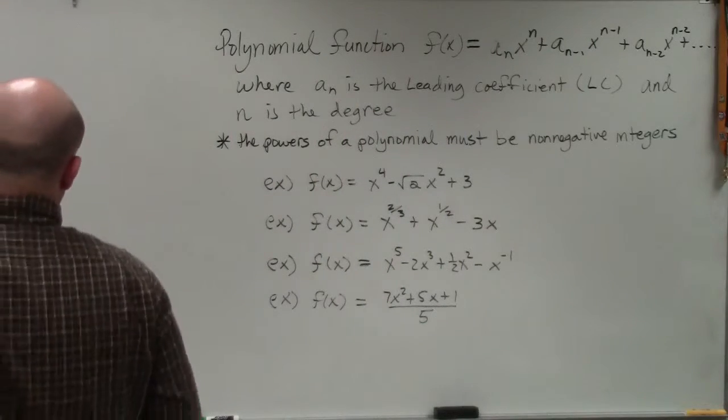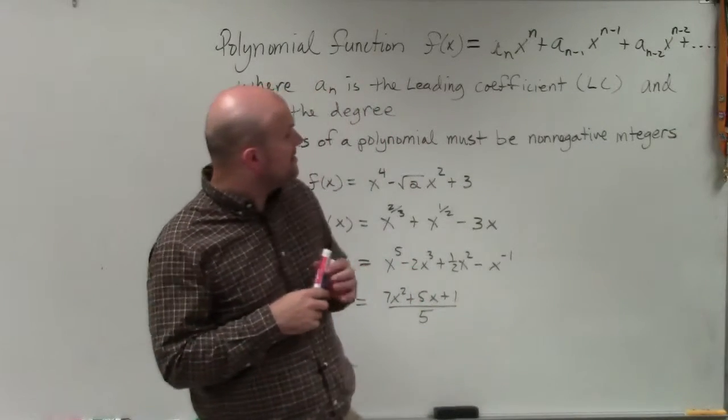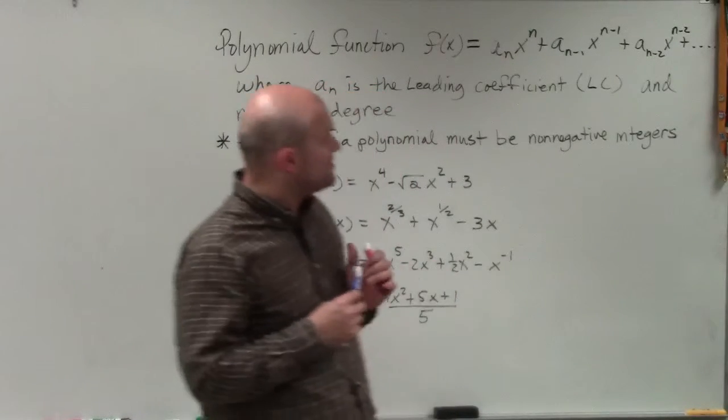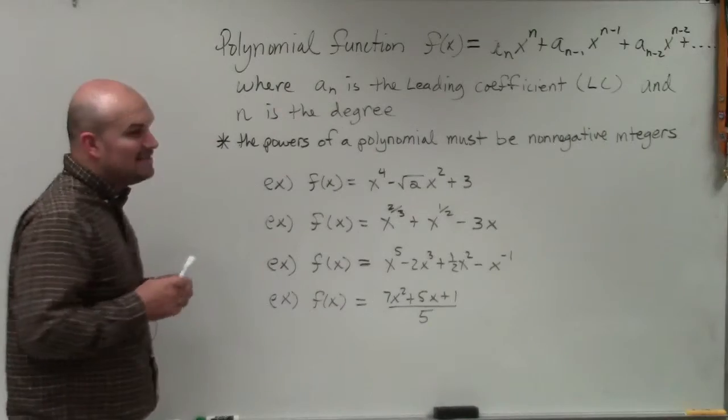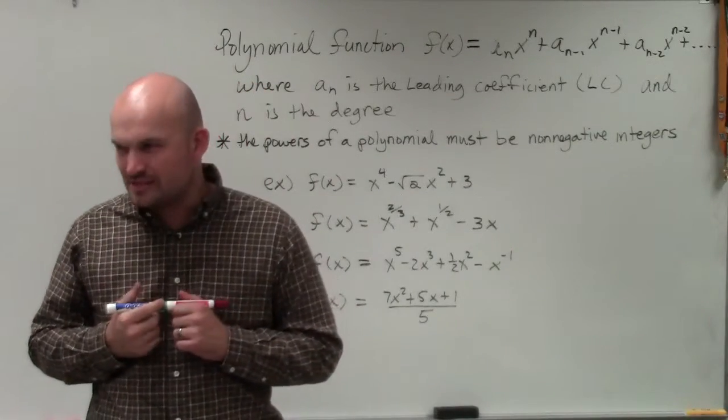Now, here, ladies and gentlemen, we have a polynomial function f of x equals a_n x to the n plus a_(n-1) x to the (n-1) plus a_(n-2) x to the (n-2). And you look at it, and you're like, what the heck is that? Why would he write even something like that? It just looks crazy, right?